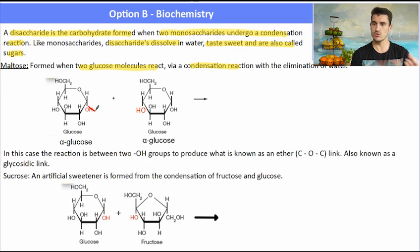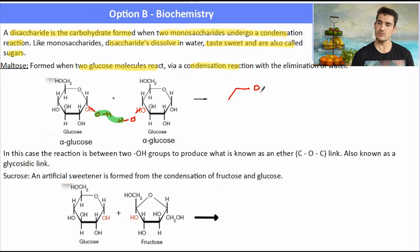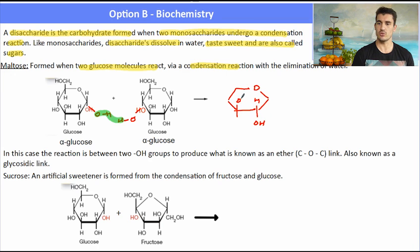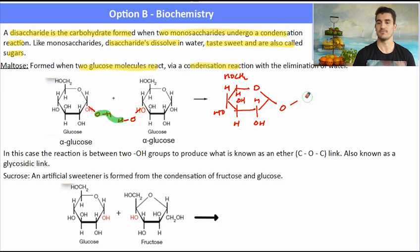Maltose is formed when we have two glucose molecules that react via a condensation reaction where we eliminate water. Two of the hydroxide groups in both of the alpha glucoses — that's where the condensation reaction will occur. This kind of drawing is as simple as linking those two sugars together; the rest of the structure won't change. Here I am just putting in the rest of the structure for the sugar, making sure that I put my OHs in the right spot, and then I need to draw the link between the two sugars, which is an ether link.